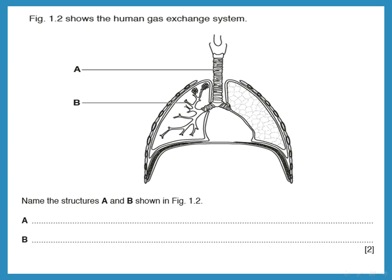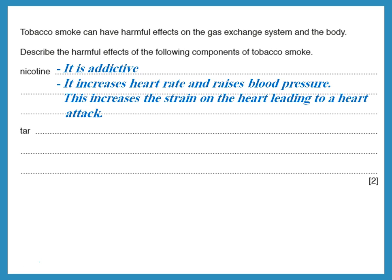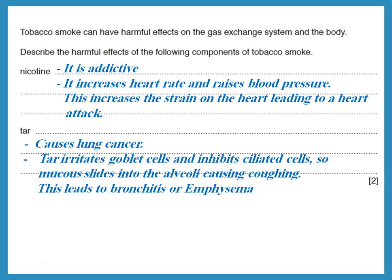In the human gas exchange system diagram, structure A is the trachea — the main tube carrying air into the lungs — and B is the bronchiole. Harmful effects of tobacco smoke components: nicotine is addictive, increases heart rate, raises blood pressure, and may lead to heart attack. Tar causes lung cancer, irritates goblet cells producing excess mucus, and inhibits cilia, causing mucus to slide into the alveoli, leading to bronchitis or emphysema.